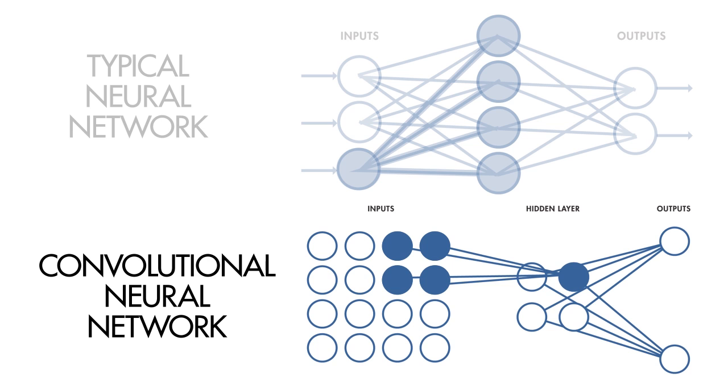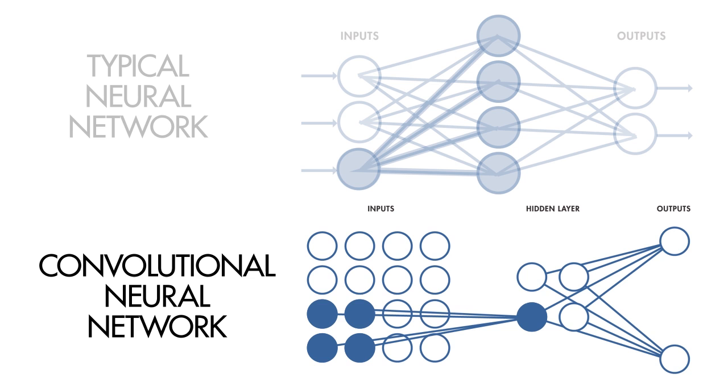The local receptive field is translated across an image to create a feature map from the input layer to the hidden layer neurons. You can use convolution to implement this process efficiently. That's why it is called a convolutional neural network.